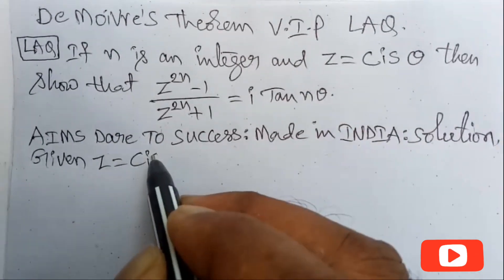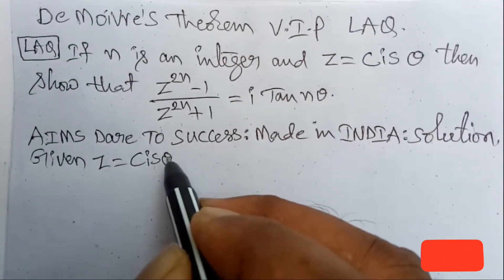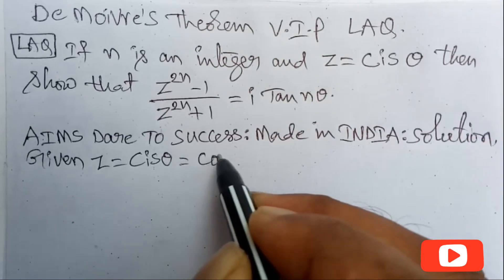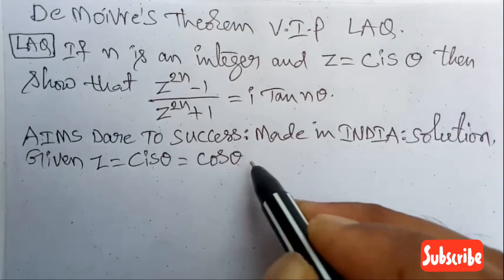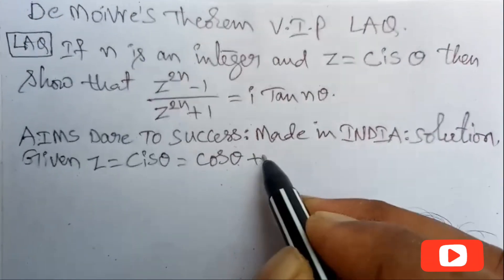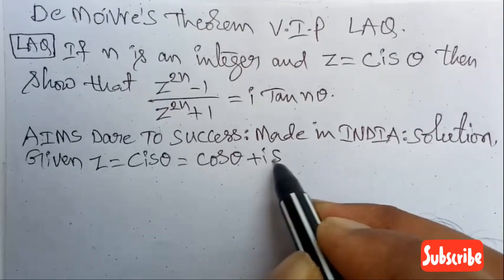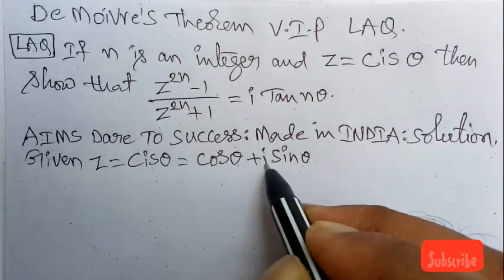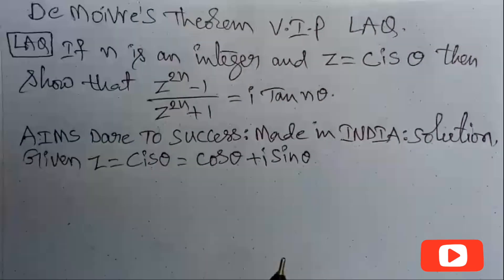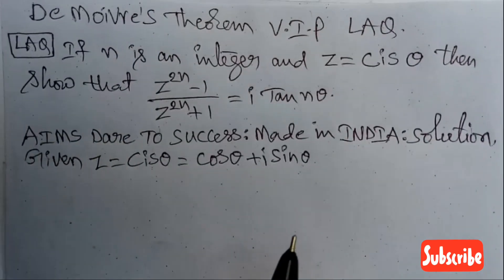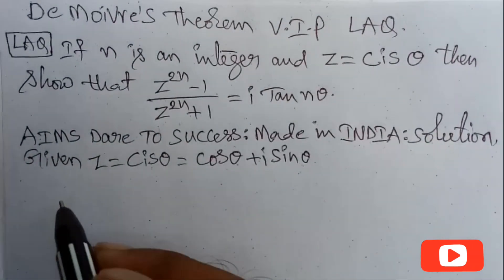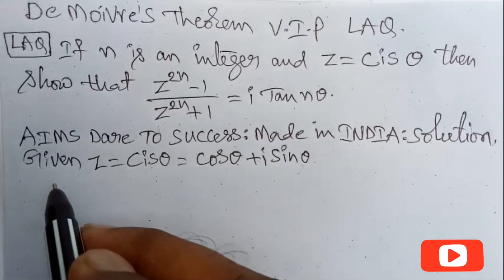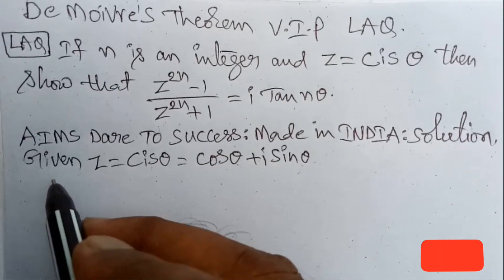Given: z is equal to cis theta. cis theta means cos theta plus i sine theta. This is the z value.